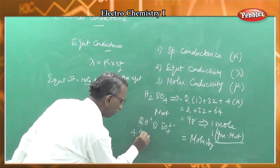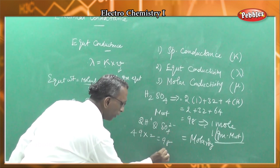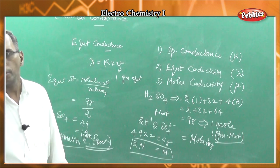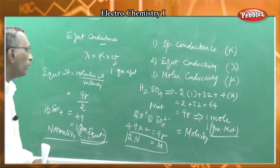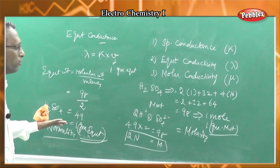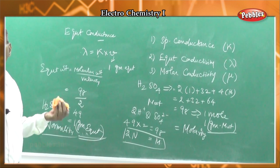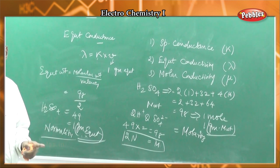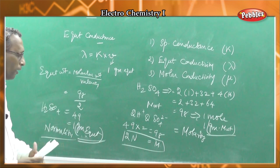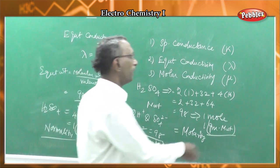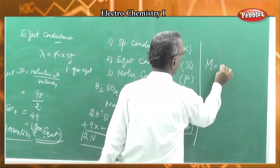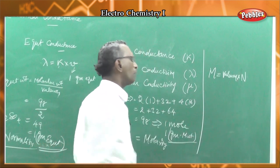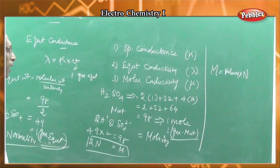Molarity is the number of moles per liter. For any solution, molarity equals valency into normality. Normality equals equivalents per liter; molarity equals moles per liter. Valency equals the number of electrons transferred from one species to another. For HCl, 1 molar equals 1 normal. For H₂SO₄, 1 molar equals 2 normal because valency is 2.